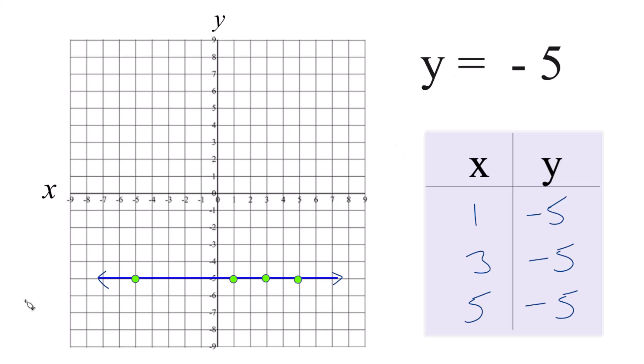That's really all there is to it. It's just a straight line. Any value for x is going to be on this line here. y will be negative 5.